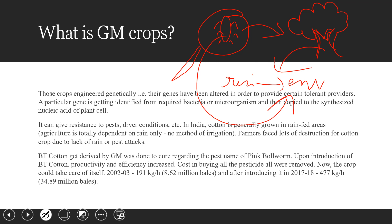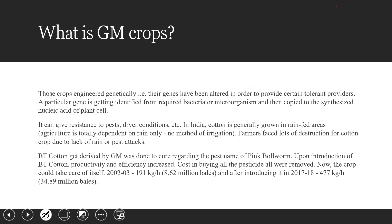These crops get engineered genetically — their genes have been altered to provide certain tolerances. A particular gene is identified from the required bacteria or microorganism, then copied into the synthesized nucleic acid of the plant. This was the basic definition and process for the production of GM crops.